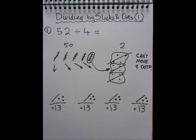So now we've crossed off all the sticks and all the dots. So we just look at the squiggly lines at the bottom and we can see that we've got one stick and three dots on each squiggly line.